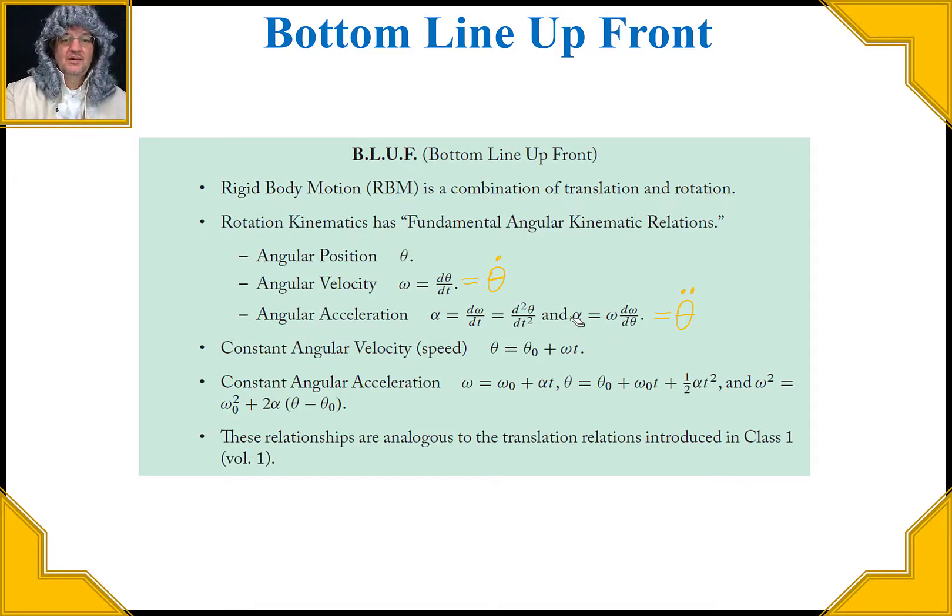So in the special case when there's constant angular velocity we can use this equation to find the position. In the special case when there's constant angular acceleration we could use these equations right here. We could find omega with a constant alpha, we could find theta by having this equation right here, or we could find the omega if we happen to know the angular acceleration and the change in angular position.